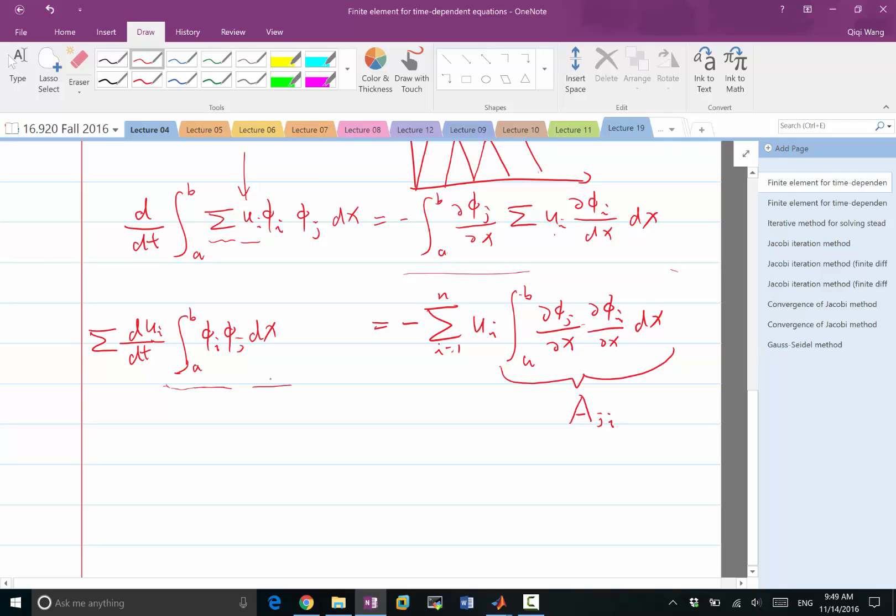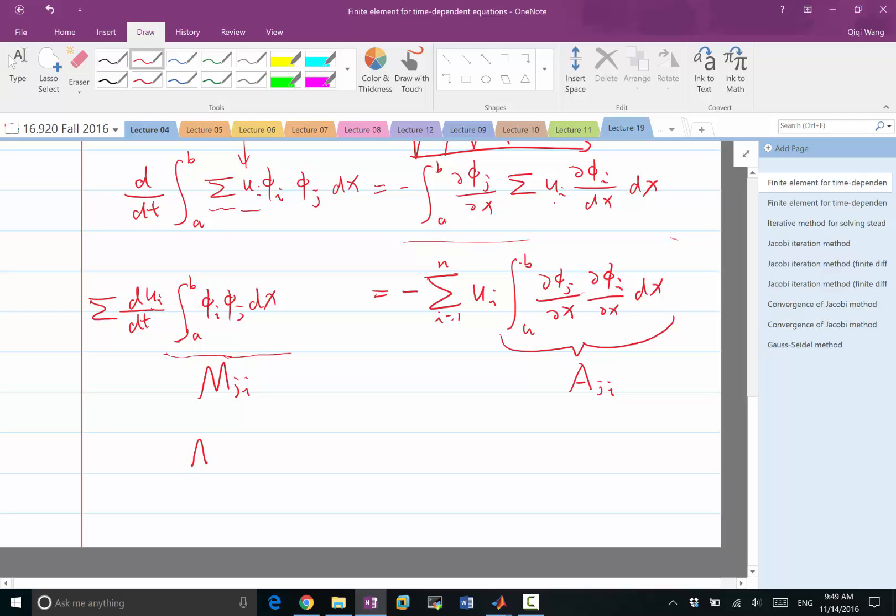This bilinear form also is discretized into a matrix, and let's call it M_ji. Equating the left-hand side to the right-hand side, what we get is M, the matrix M. Think of M_ji multiplied by dui/dt. This is M times dui/dt, where u is now the vector of u1, u2, u3, etc. So this is a vector times a matrix, being the left-hand side. And the right-hand side is equal to minus a matrix times the vector u.